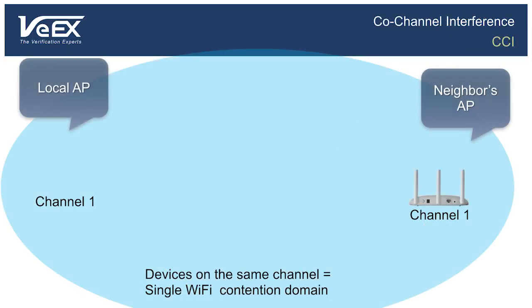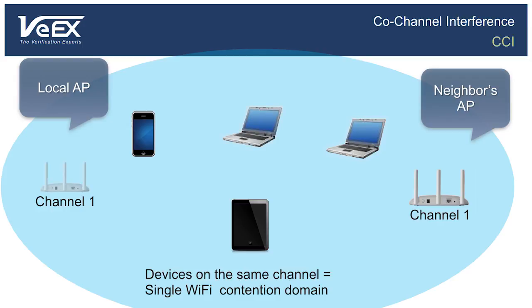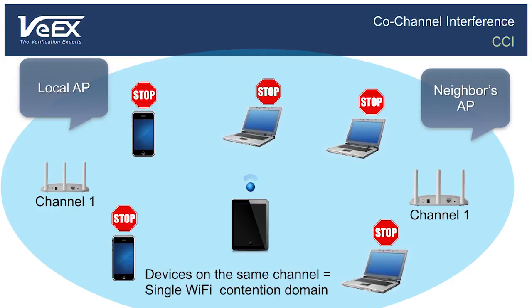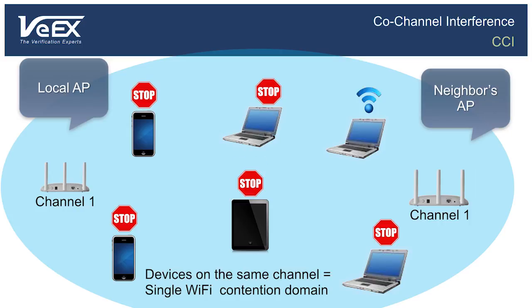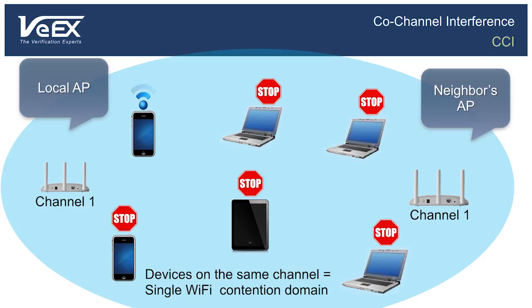Now imagine that your closest neighbor's access point is configured to the same RF channel as your own. In that case, not only do your own devices share available bandwidth, but all of the devices that are within range have to share. By range, it means that their signal's strength is strong enough to be detected by your devices. This will trigger the CSMA-CA mechanism to stop transmission if it detects activity, regardless of whether the originator is within your own network or your neighbor's network. To follow that previous analogy, that room full of polite people has now doubled in size.